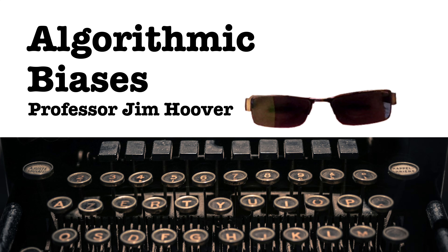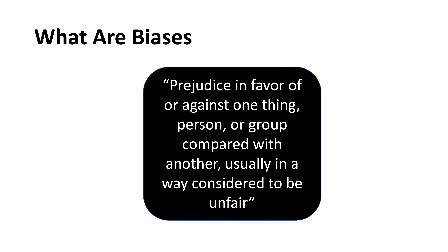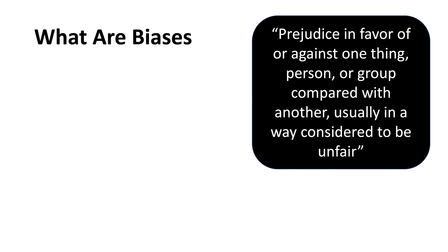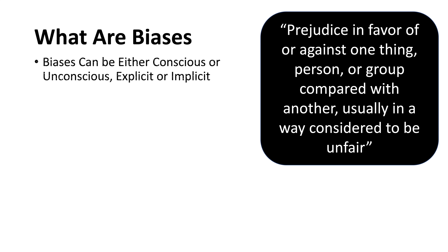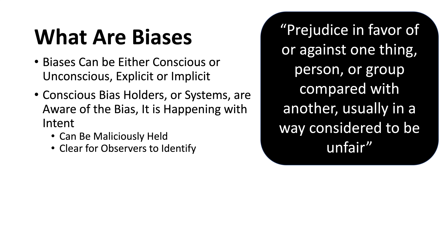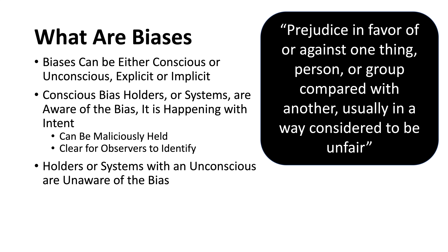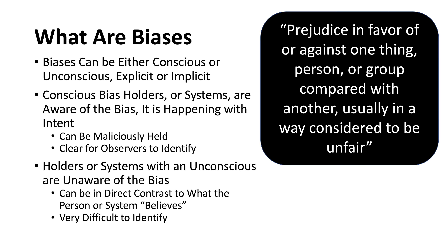So let's define biases before we begin. A bias is a prejudice in favor of one thing or against another, and we often consider these prejudices or biases to be bad. Biases can be either conscious or unconscious. For our purposes, we're going to focus on unconscious biases, or implicit biases, that find their way into our software systems.